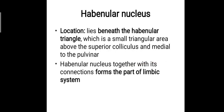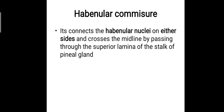The habenular nucleus lies beneath the habenular triangle, which is a small imaginary triangular area above the superior colliculus and medial to the pulvinar. The habenular nucleus together with its connections forms part of the limbic system. The habenular commissure connects the habenular nuclei on either side and crosses the midline by passing through the superior lamina — that is, the dorsal lamina — of the stalk of the pineal gland.